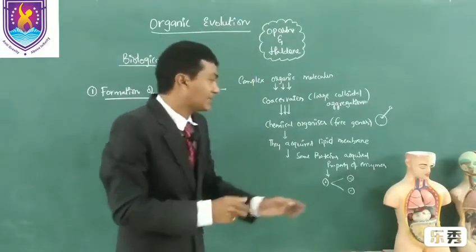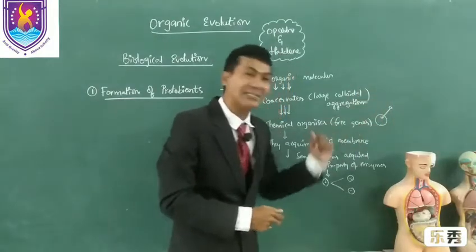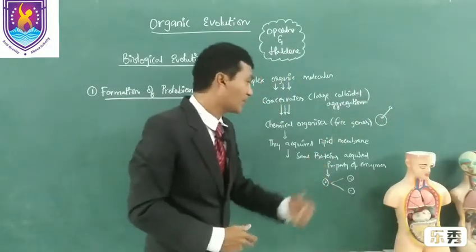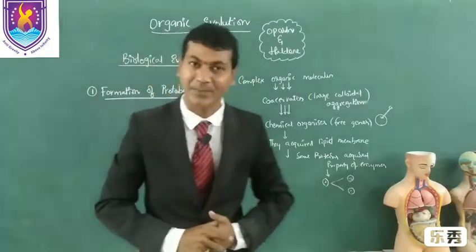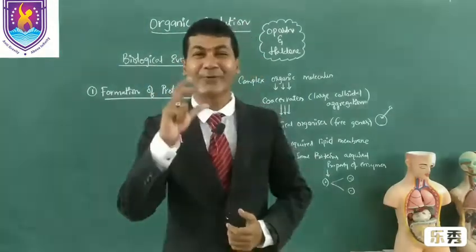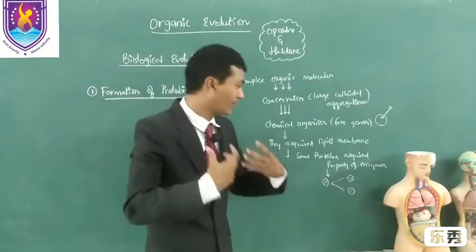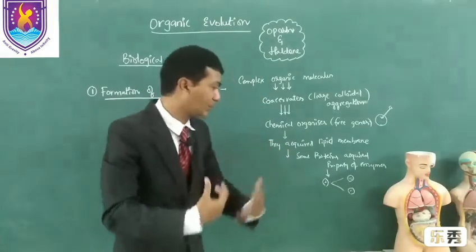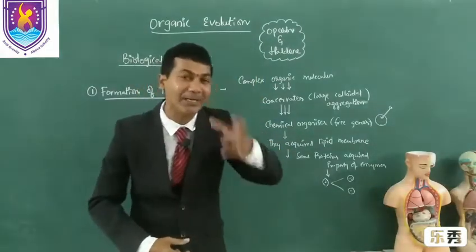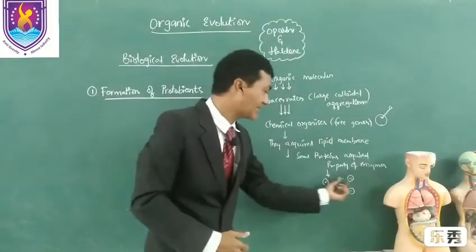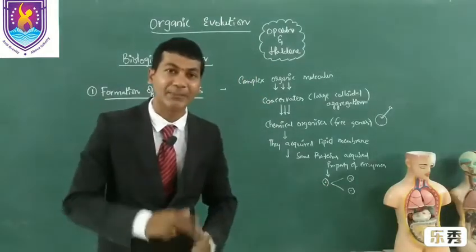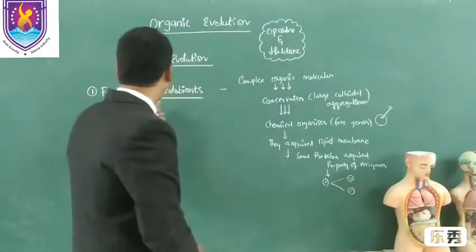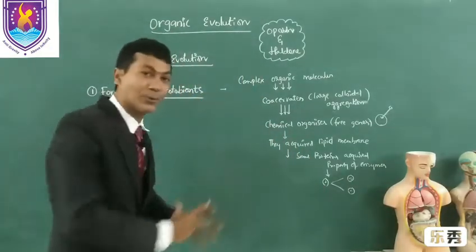Some of the proteins acquired from the surroundings gained the properties of enzymes. When enzymatic properties were acquired by the proteins, rapid multiplication of cells took place as cells started dividing. This is the formation of protobionts.